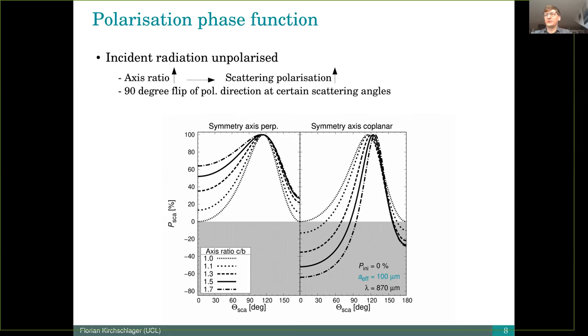The negative sign of the polarization in the right plot indicates that we have a 90 degree flip of the polarization direction. This is for unpolarized radiation.